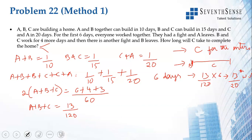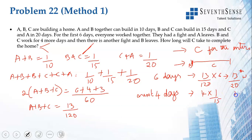Now A leaves. B and C work for 4 more days. B and C in one day do 1/15th of the work. So in 4 days they finish 4 × 1/15 = 4/15th of the work. After the first 6 days, only B and C are working for the next 4 days, finishing 4/15th of the work.